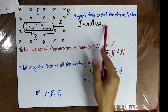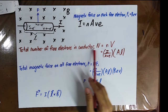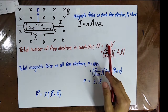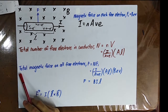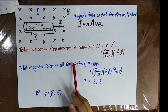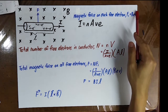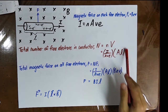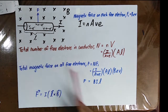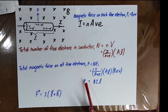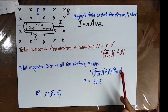The total number of free electrons in the conductor is the number density times the volume of the conductor. The total magnetic force on all free electrons equals the force on each individual free electron times the total number of free electrons in the conductor. This gives us the total magnetic force F = BIL, which shows that F = BIL actually comes from F = BQV.